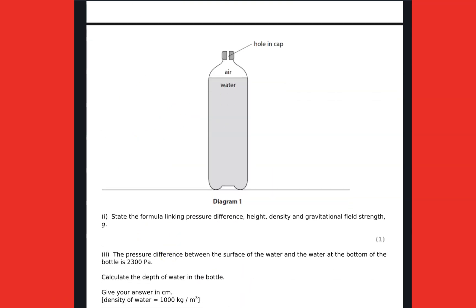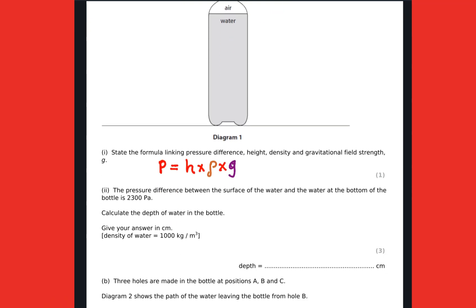Going further, now we have another question. State the formula linking pressure difference, height, density and gravitational field strength. And at this given point we're going to say pressure equals height times density times the gravitational field strength, h rho g. Height is the height of the liquid column, rho is the density of the liquid, and g is the gravitational field strength. You need to remember those are the factors that affect pressure in liquids or fluids.